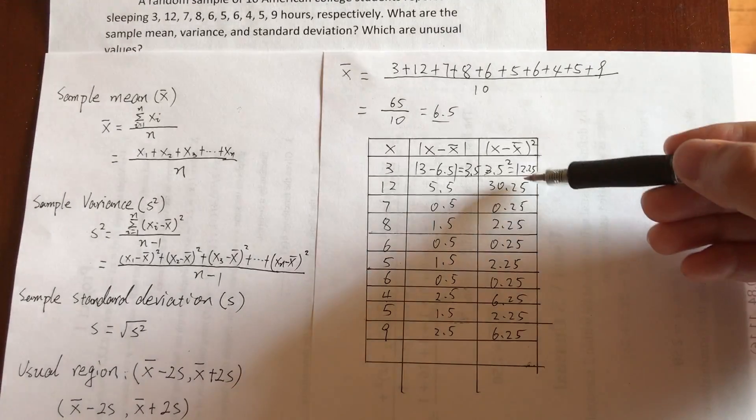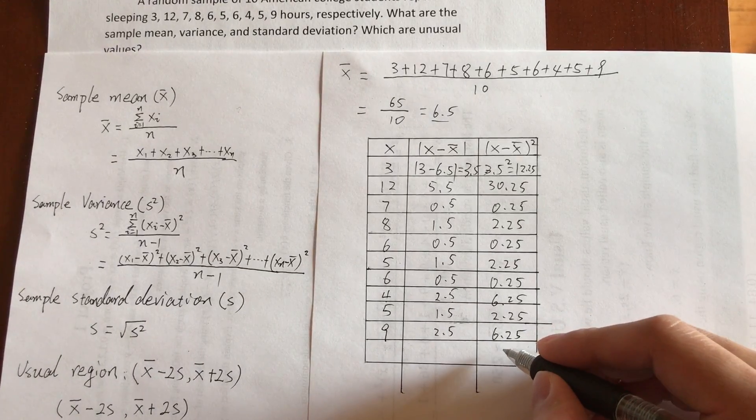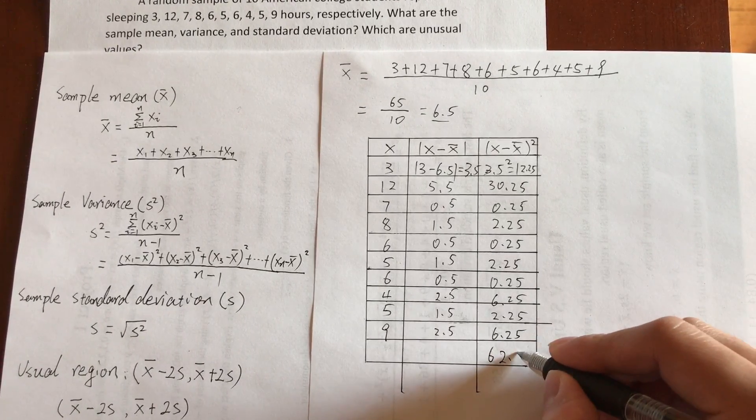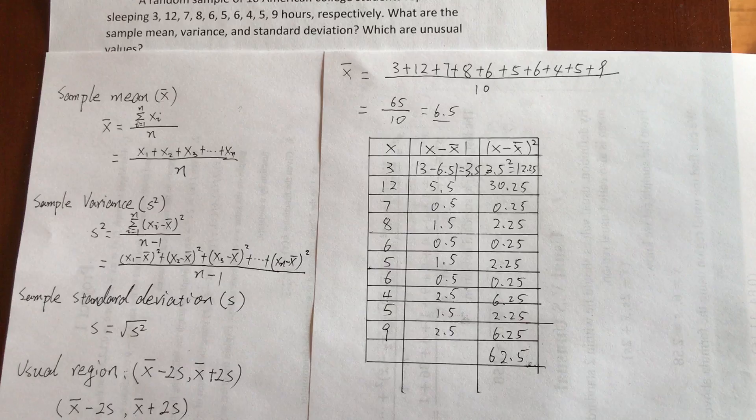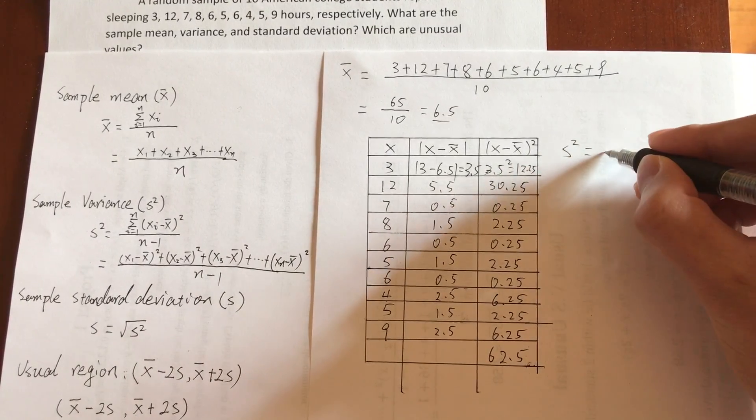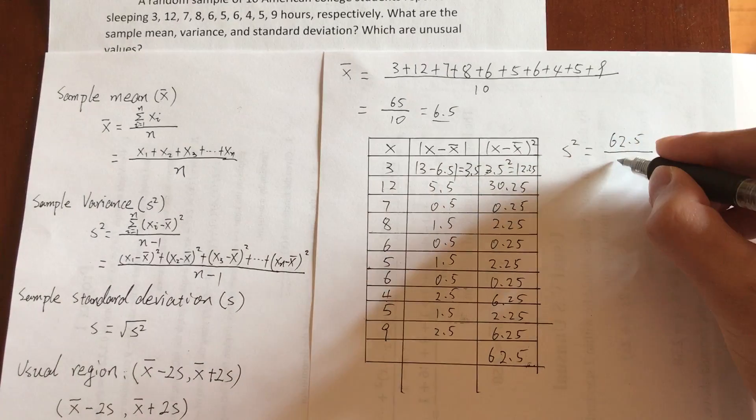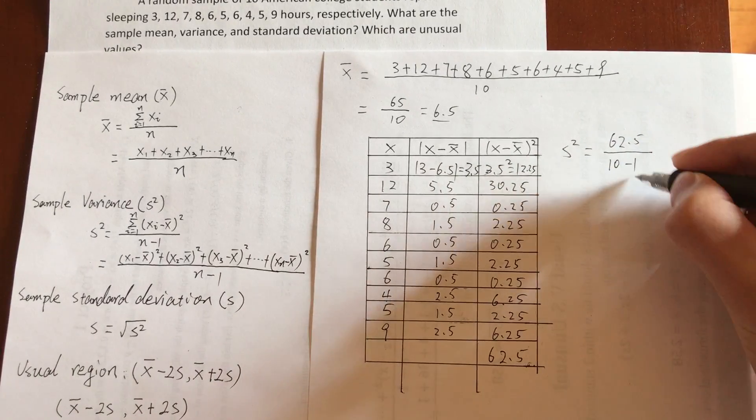And then we add those numbers up, we get 62.5, and variance equals this number divided by sample size minus 1.